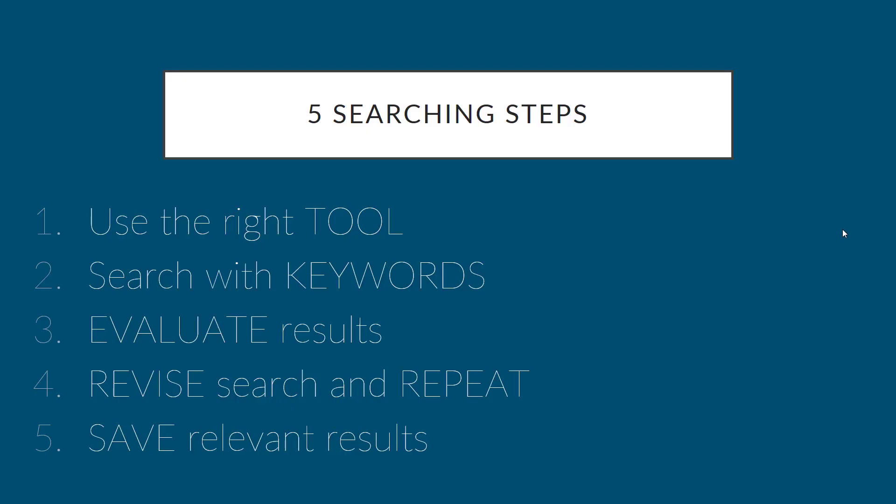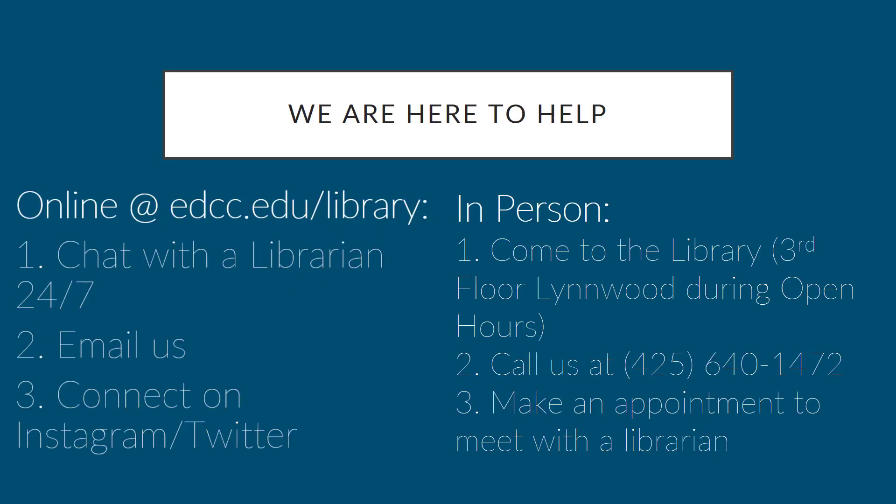Now it's your turn. Practice using the five steps to find relevant newspaper and magazine articles on your big question. Make sure to download the PDF of at least one relevant article before returning to Canvas to take the quiz. Good luck searching! If you have any questions, please contact a librarian using any one of these methods — we are here to help.